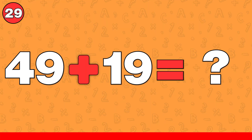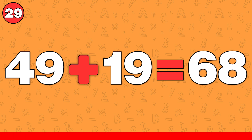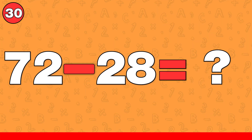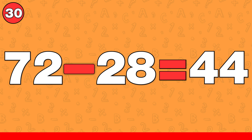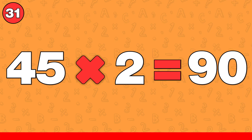49 plus 19. The answer is 68. 72 minus 28. The answer is 44. 45 times 2. The answer is 90.